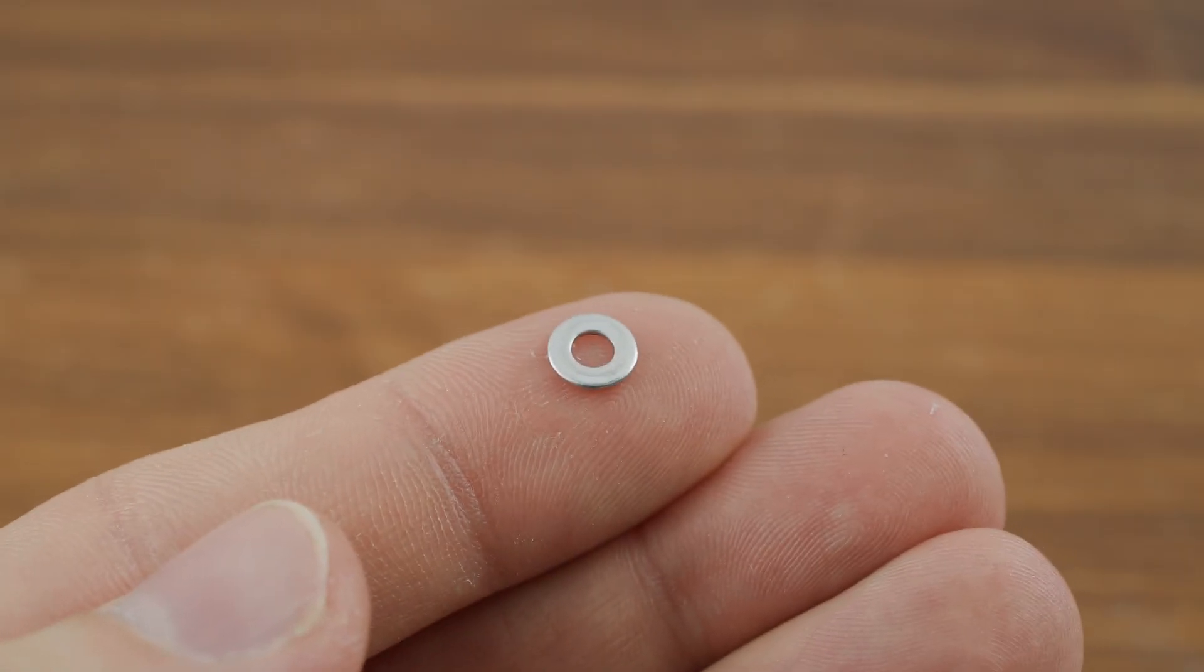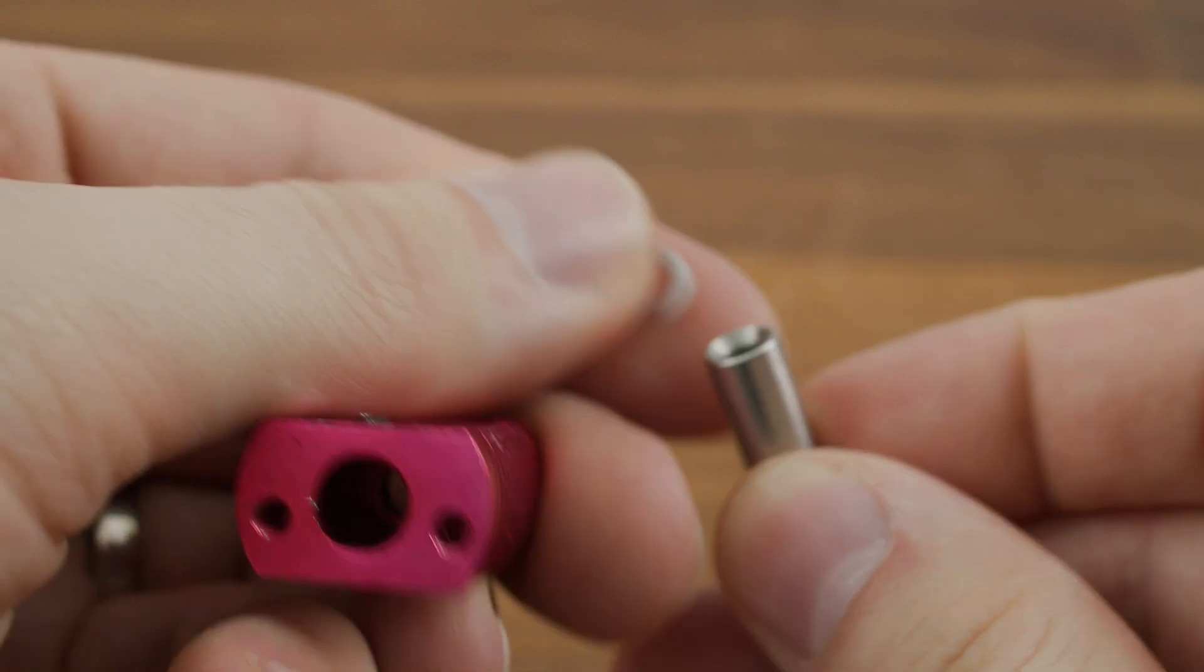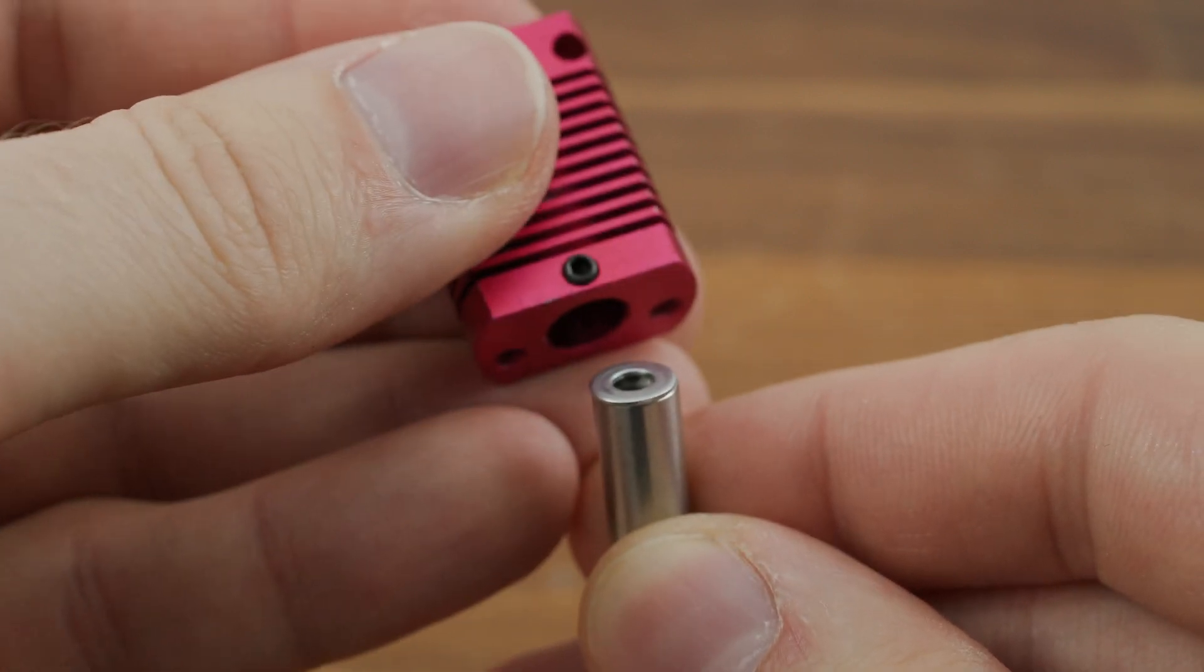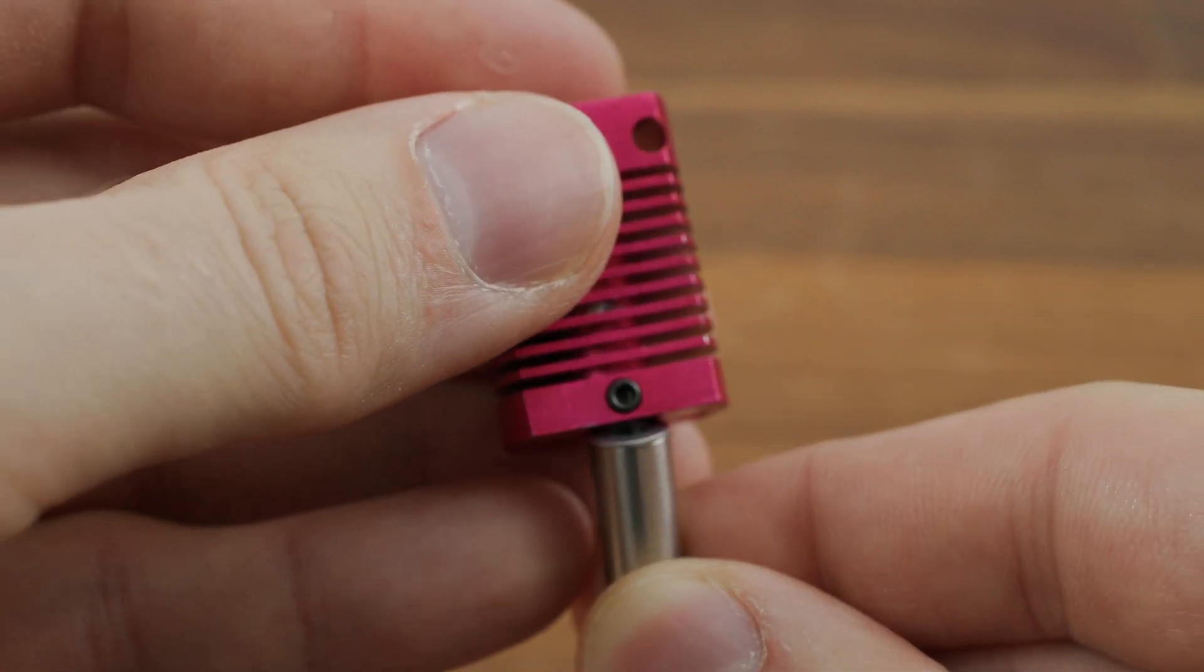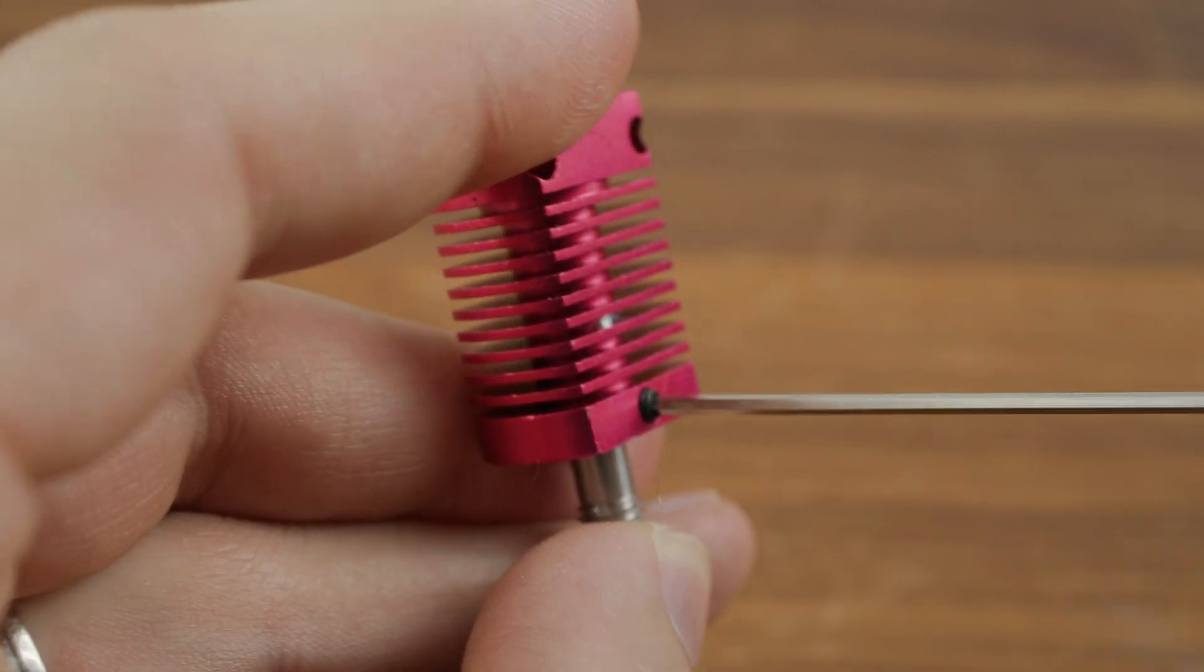If you choose to use a washer, you will have a very similar procedure. The washer needs to be inserted into the part of the heatsink where the heat brake is inserted. Then the heat brake needs to be pushed all the way in and secured with a worm.